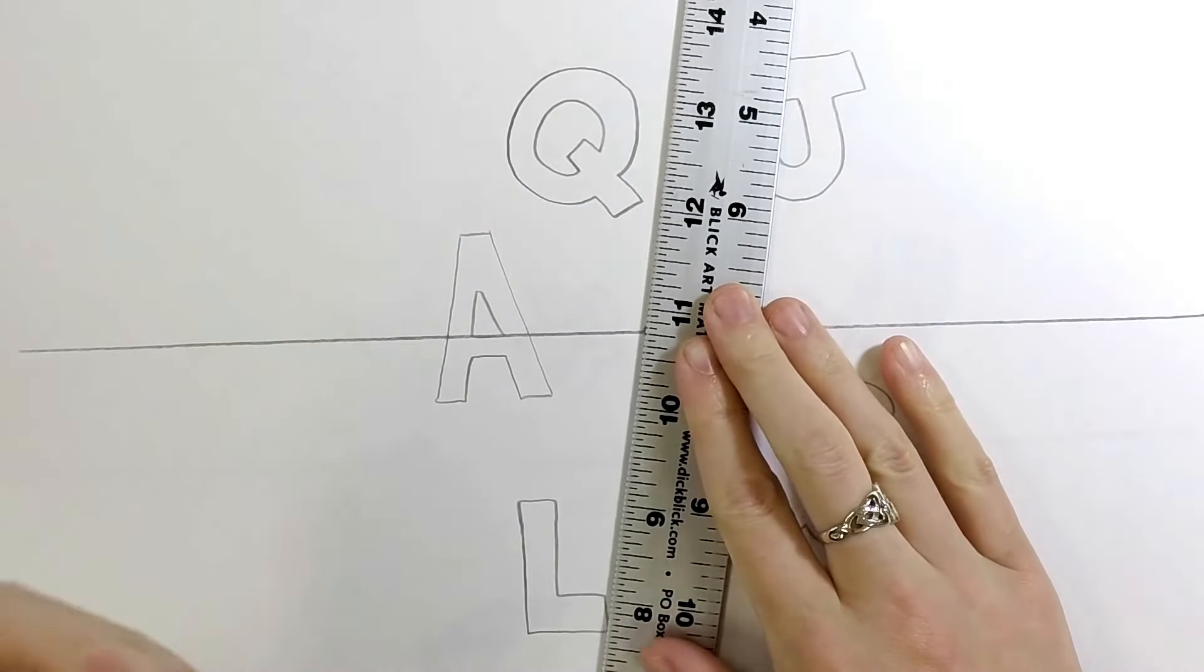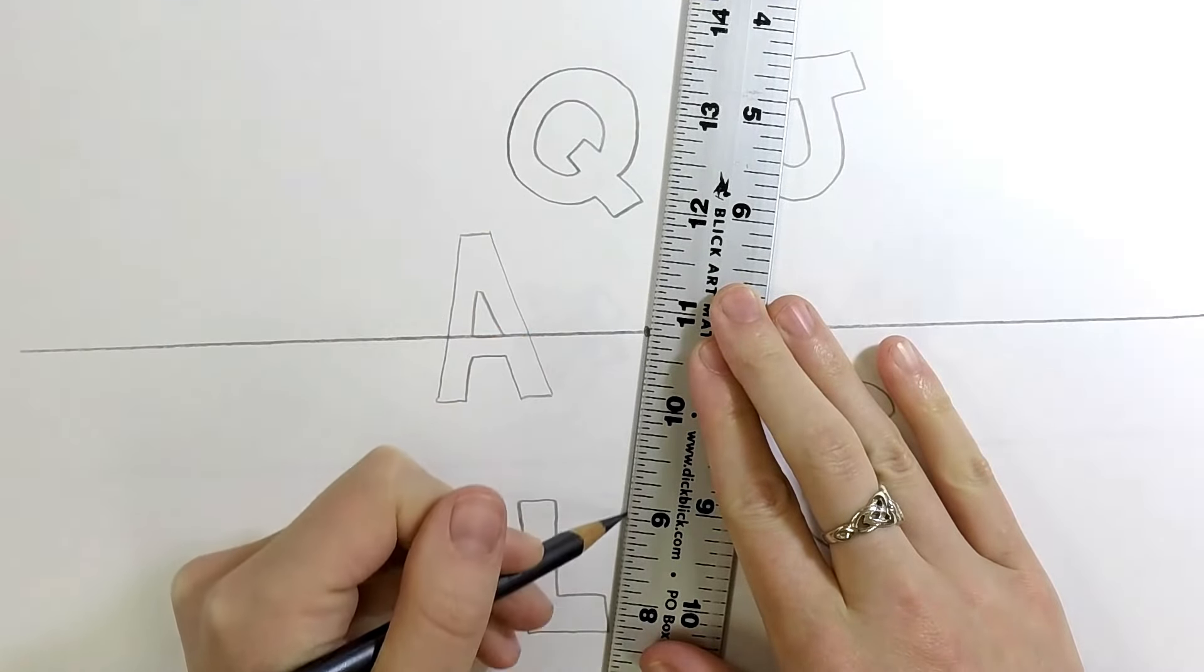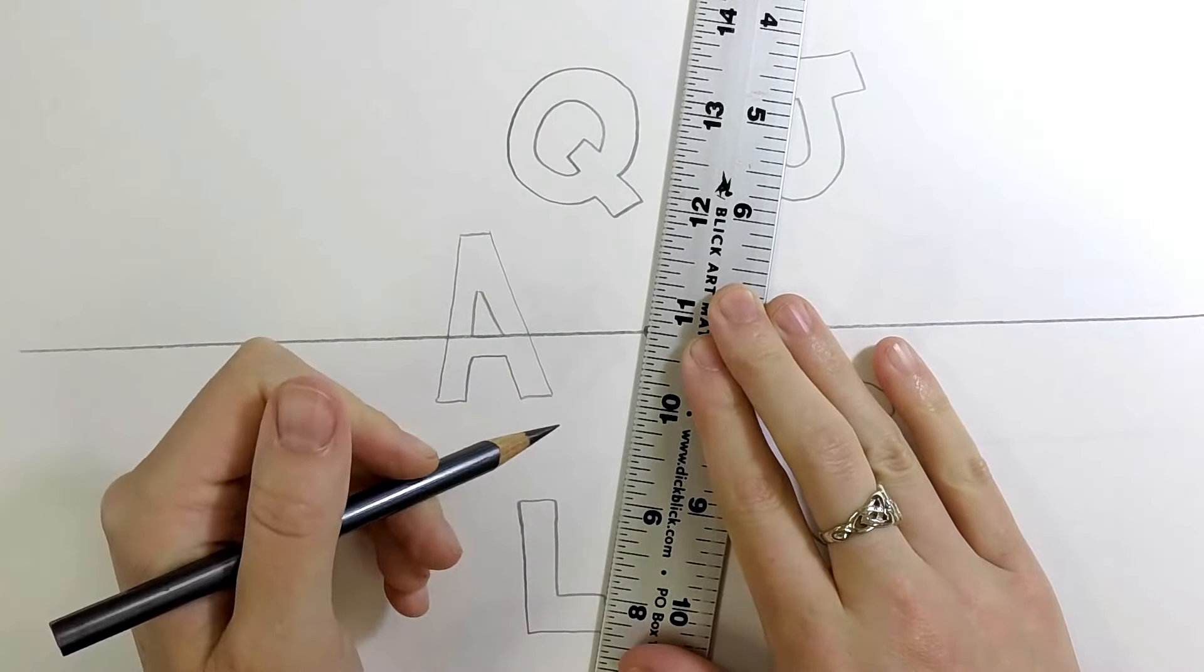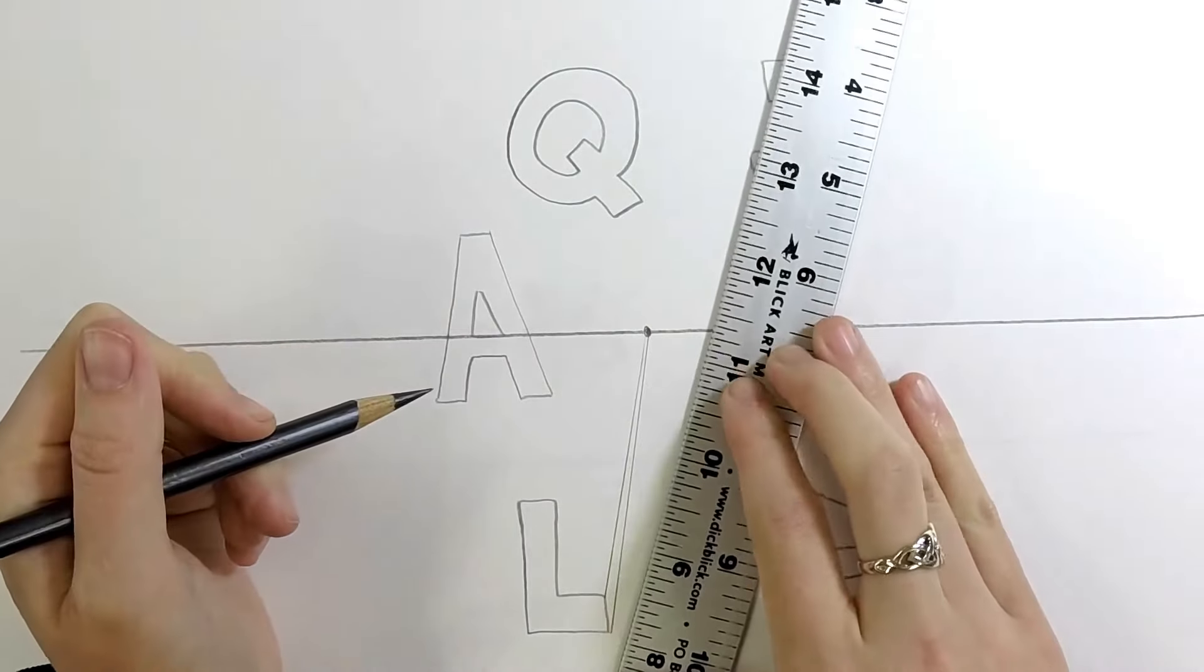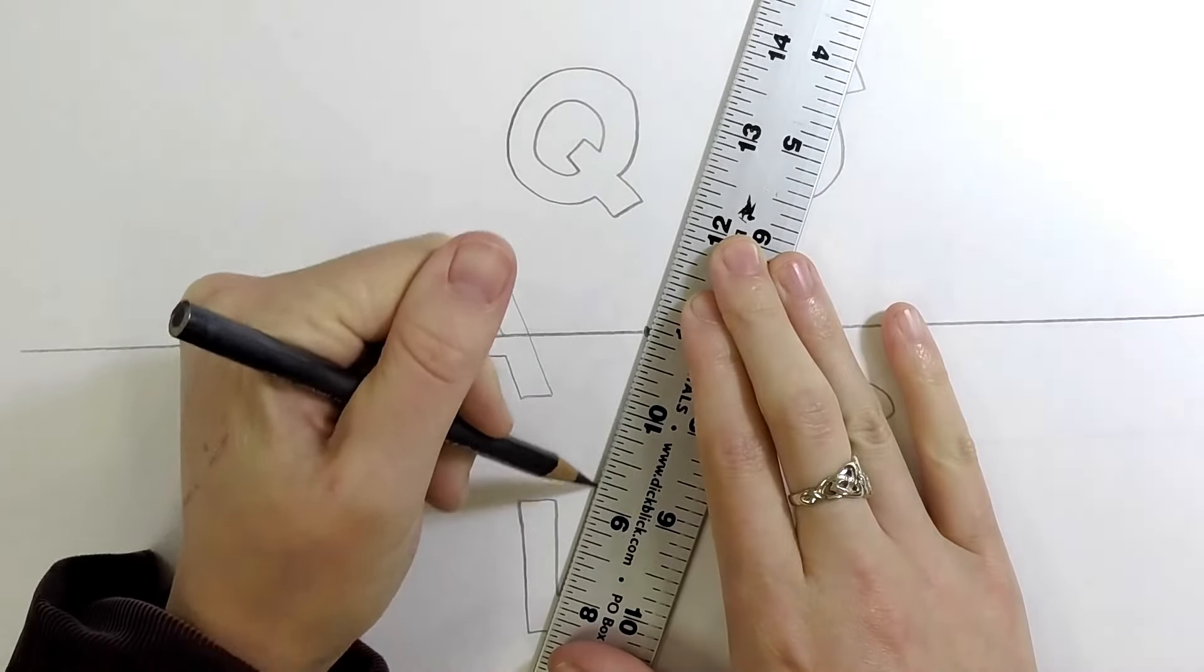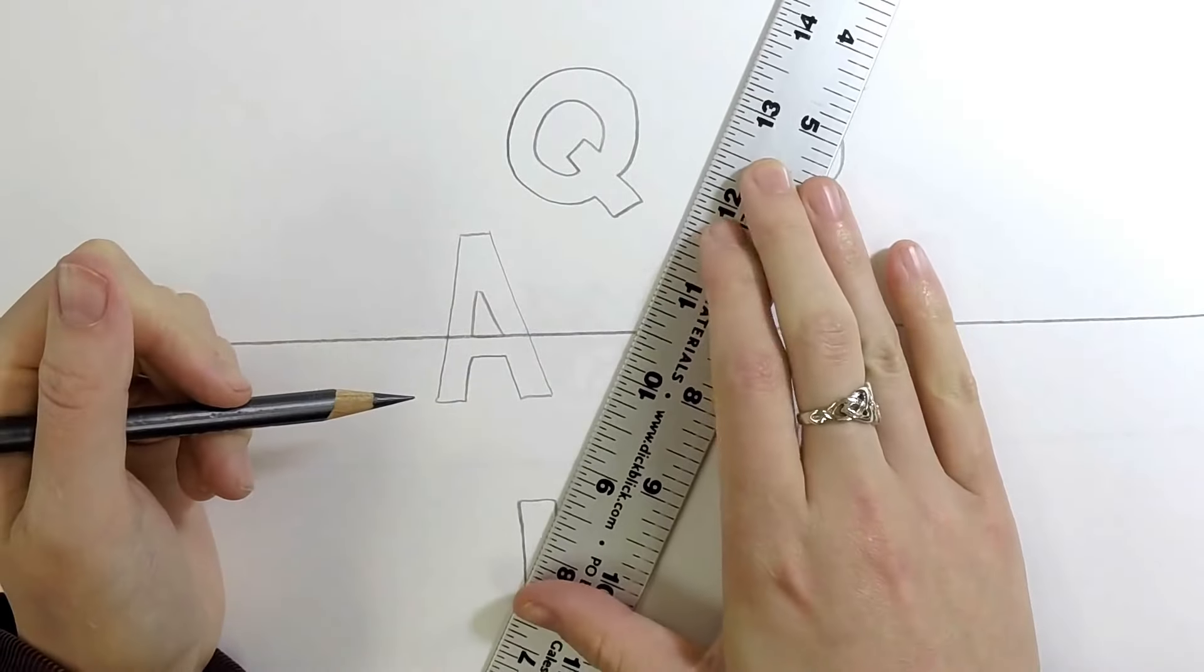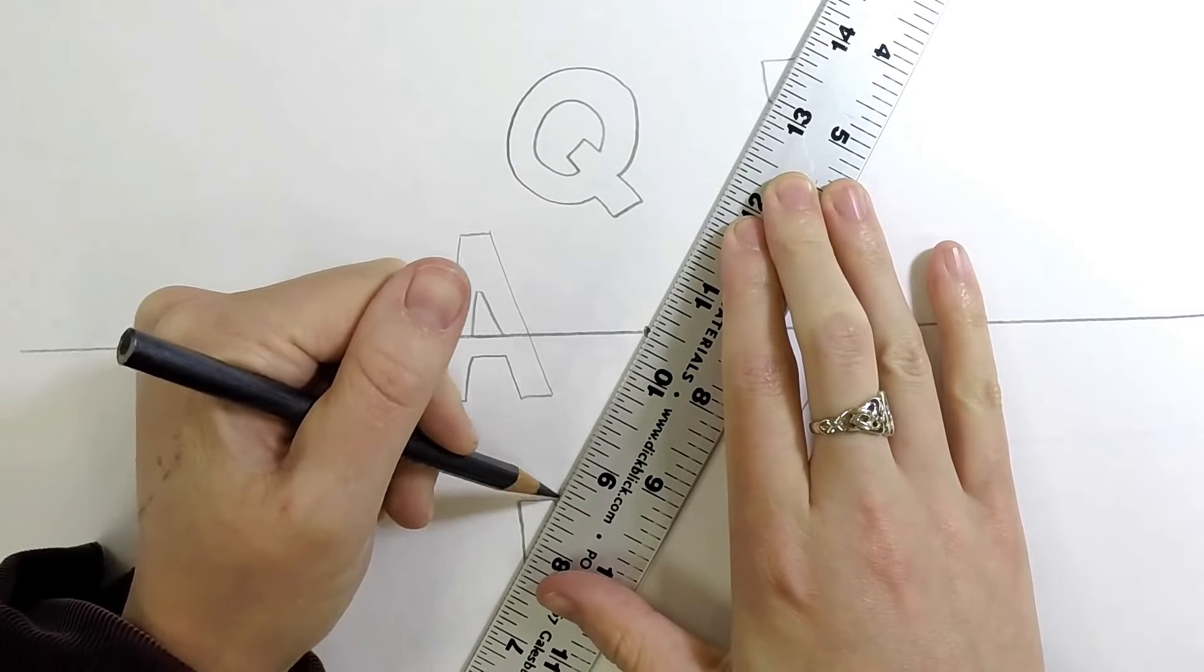Next up we're going to start finding the converging lines. So we'll start with the hard edges first just because they're a little easier to find. So we will connect our converging lines from the corners of our letter to the vanishing point. Remember, draw it light until you get it right. You are erasing most of these converging lines so we want to draw them lightly.